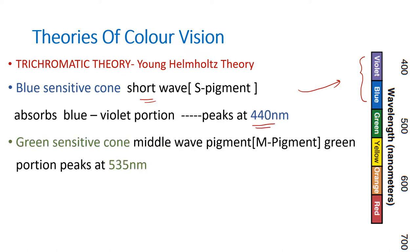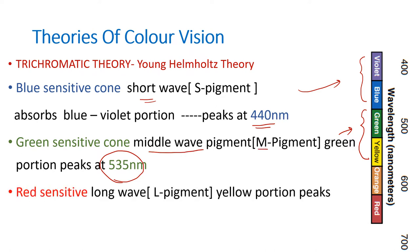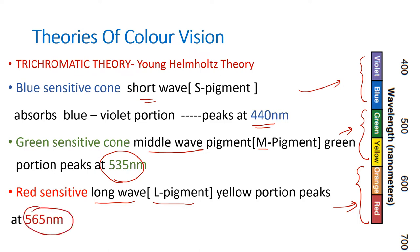Next, the green-sensitive cone is maximally sensitive to the middle portion of the electromagnetic spectrum, with maximum absorption around 535 nanometers. They are called M cones, containing M pigment. The red-sensitive cones are maximally sensitive to the long wavelength region, called L cones containing L pigment, with maximum sensitivity around 565 nanometers. So we have three cone types: blue-sensitive, green-sensitive, and red-sensitive.